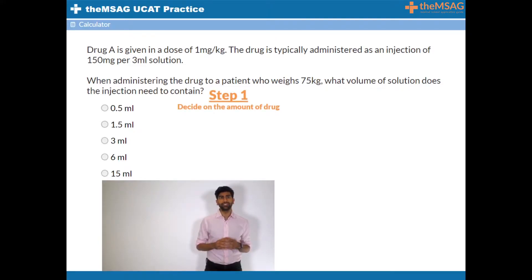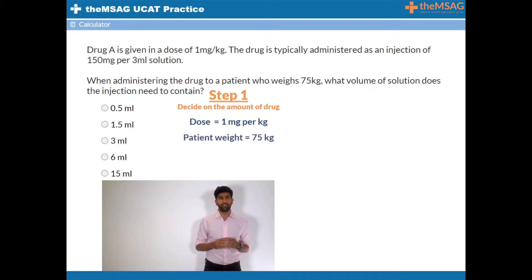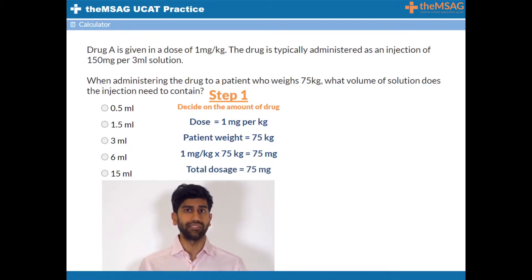The first thing you need to do is decide on the amount of drug you will give this patient. If the drug is given in a dose of 1 milligram per kilogram and the patient weighs 75 kilograms, all you need to do is multiply the dose by the patient's weight. 1 milligram per kilogram times 75 kilograms equals 75 milligrams. Therefore we need to administer 75 milligrams of active substance.